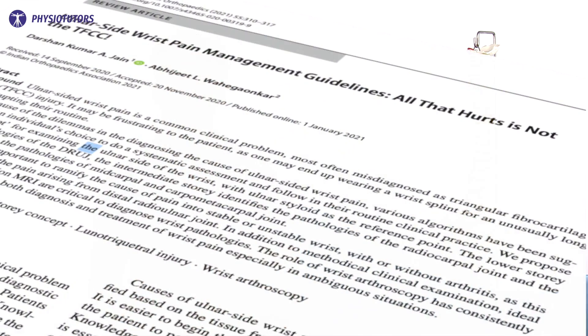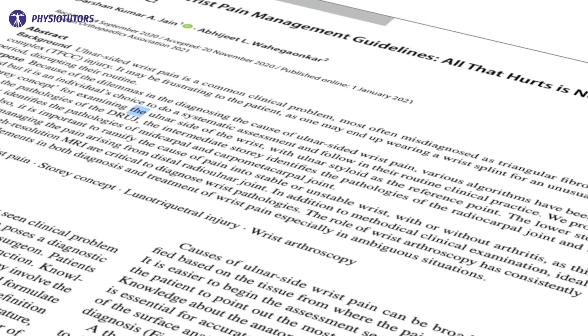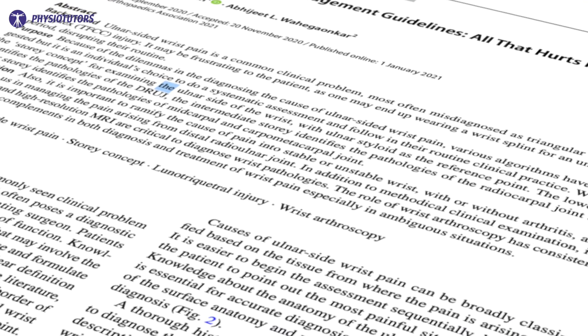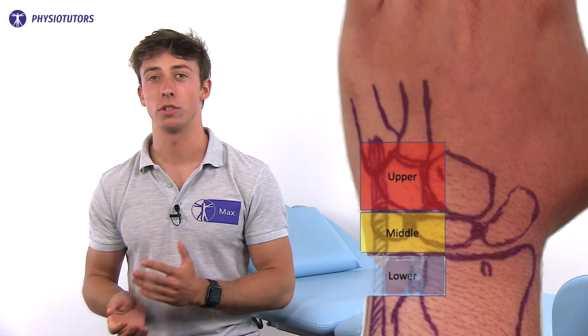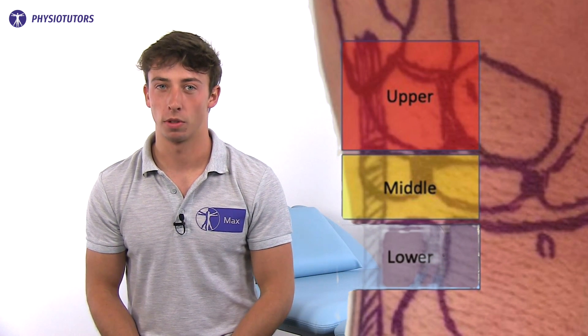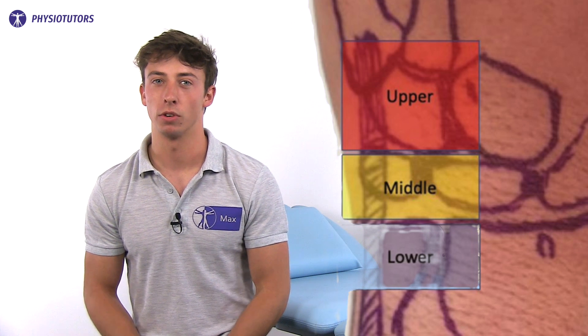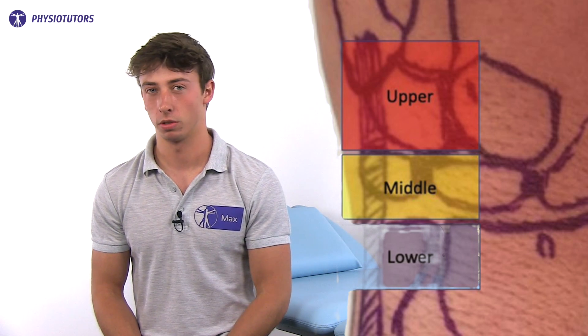Hi and welcome back to Physiotutors. This practical paper may be a guide in your assessment of ulnar-sided wrist pain. There are several proposed algorithms for history taking. The authors suggest a three-story model reflecting the lower, middle and upper regions. The lower story regards pathologies of the distal radio-ulnar joint, the middle of the radiocarpal joint, and the upper of the carpometacarpal joints.